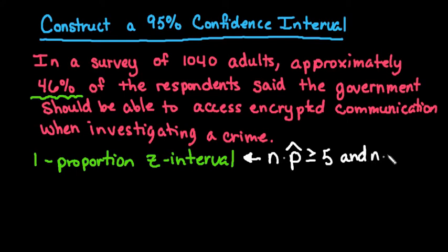So basically what this is saying is that my number of successes has to be more than 5, and my number of failures has to be more than 5.